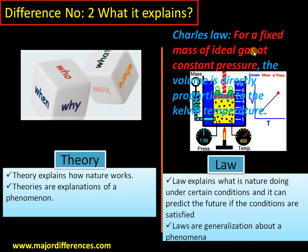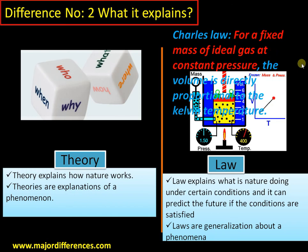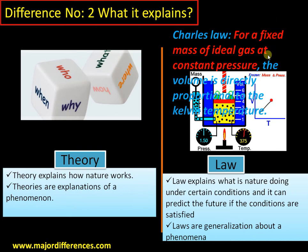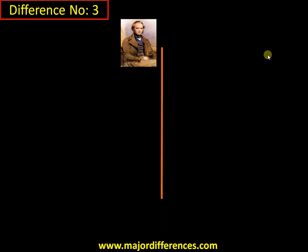Here, if the condition is satisfied — a fixed mass of ideal gas at constant pressure — this will happen: volume increases on increase of temperature. This will happen every time the condition is satisfied. Therefore, a law explains what nature is doing under a certain set of conditions.